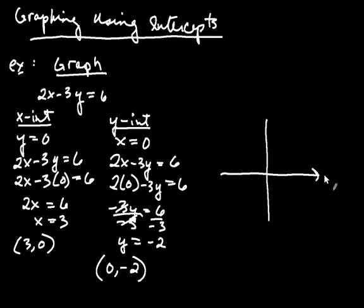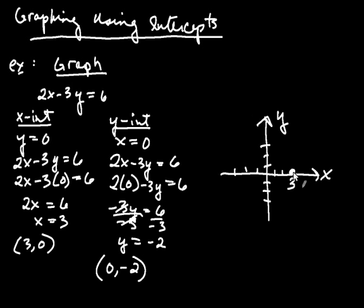Here are our axes — the x-axis and the y-axis. The point where x is 3 and y is 0 is over here on the x-axis. And for the other point, x is 0 and y is negative 2, which is right here on the y-axis. So the line crosses the x-axis at the x-intercept and the y-axis at the y-intercept. Then you graph the line through those two points.